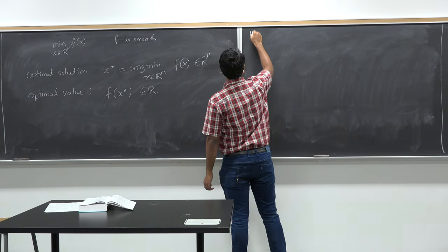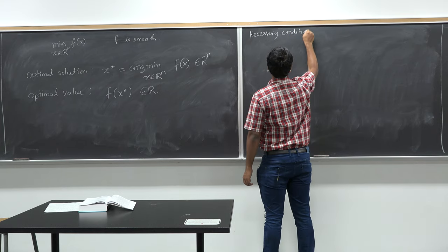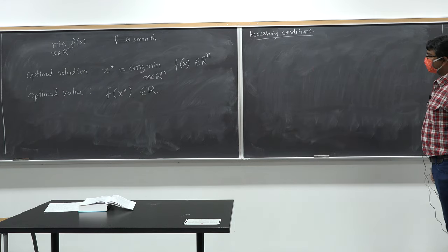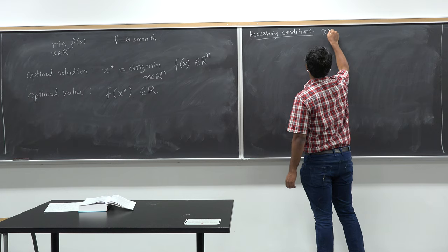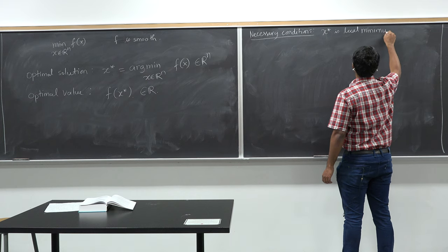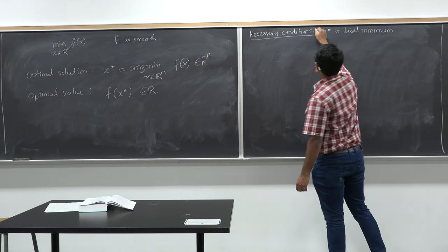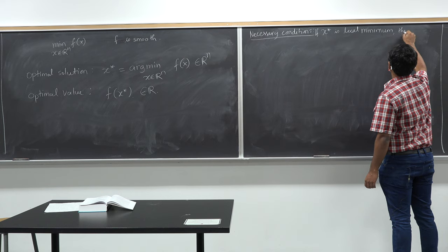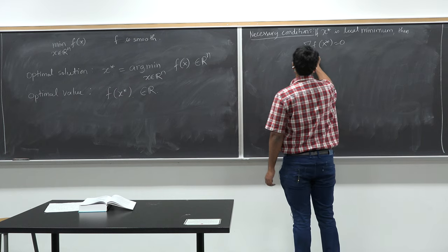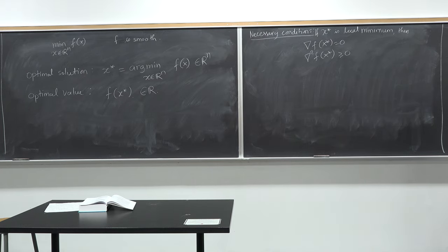Here is the first result: the necessary condition. If x star is a local minimum, then the first derivative of f at x star is zero, and the second derivative of f at x star is positive semi-definite.